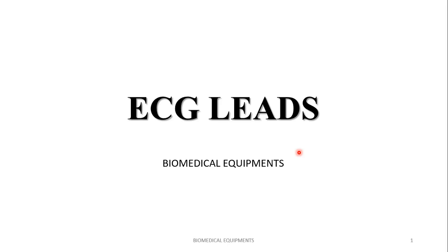After discussing the ECG machine, I would like to discuss ECG leads. It's a part of the ECG machine — how the electrodes of the ECG machine are placed. The different placements of the ECG electrodes are called leads. There are different types of lead systems through which the ECG signal is acquired, based on the diagnosis or the machine, as different machines use different lead systems.